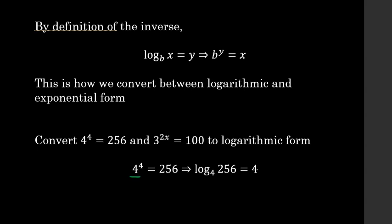The way that you read logarithms is log base whatever of whatever quantity you have. So this would be read as log base 4 of 256 equals 4. For the second one, 3 to the power 2x equals 100: the base 3 becomes your base, the exponent 2x goes by itself on the right-hand side of your equality, and the 100 that was by itself on the right-hand side goes inside of your logarithm.